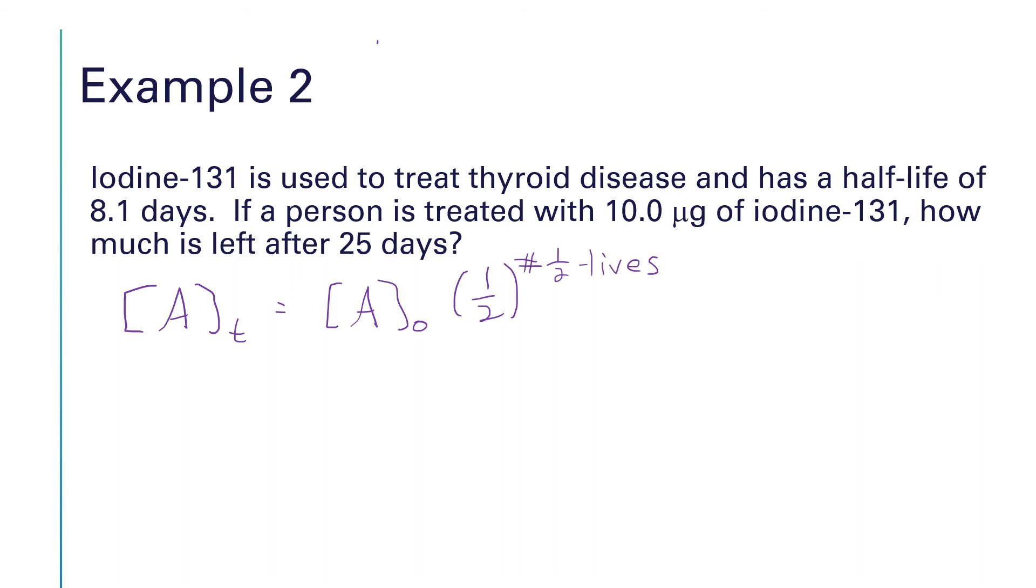The one thing we're going to have to precalculate is the number of half-lives. The number of half-lives will be equal to the elapsed time, which is 25, divided by the length of a half-life, which is 8.1. So 25 divided by 8.1 is 3.086. Again, I'm carrying some extra sig figs through here. We'll probably base our final answer off of the three sig figs in the amount of iodine that we were given to begin with.